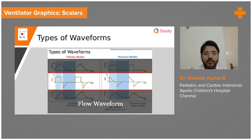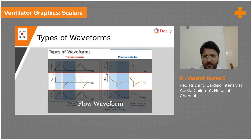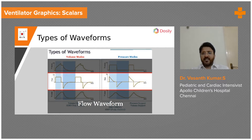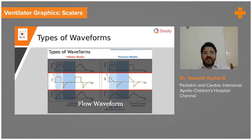In volume control mode, flow is the constant variable. If the flow appears constant or in a square waveform, it becomes volume control mode. So if you see in the pressure-time scalar that the pressure is constant, it is pressure control mode. In volume control mode, the flow is constant — you can see a square waveform — and this becomes volume control mode.